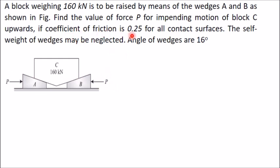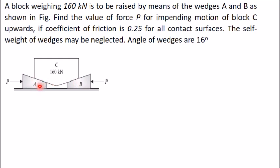The coefficient of friction is 0.25 for all contact surfaces — between B and the horizontal surface, between B and C, between A and C, and between A and the horizontal surface. The self-weight of the wedges may be neglected. The angle of both wedges is 16 degrees from horizontal, and since they are symmetrical, equal loads are required to raise block C.